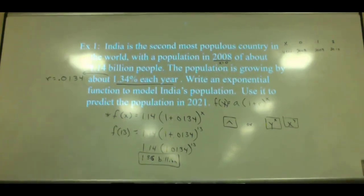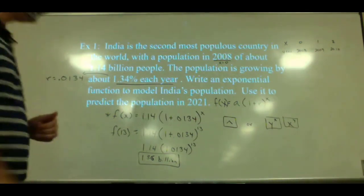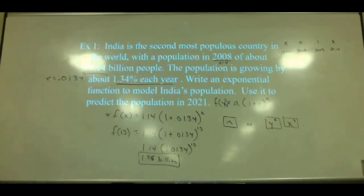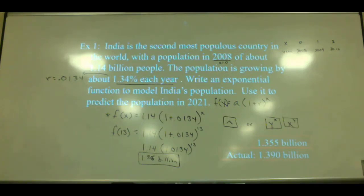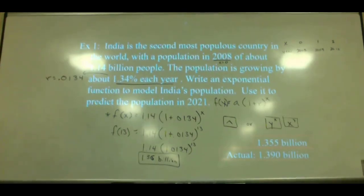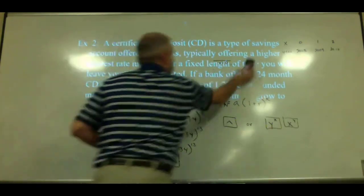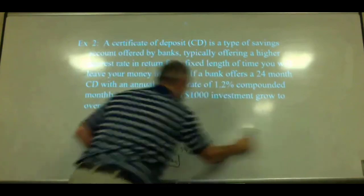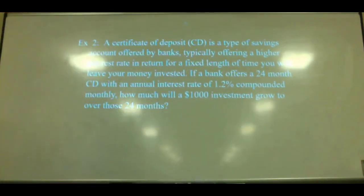Now everybody knows which button to use for the exponent. Our model gives 1.355 billion. The actual population I looked up is 1.390 billion — relatively close but not exact, because it's a model used to predict. This model is 13 years old, so they'd need to update it for more accuracy. That's what models do — they help us predict, but they're not exactly right.